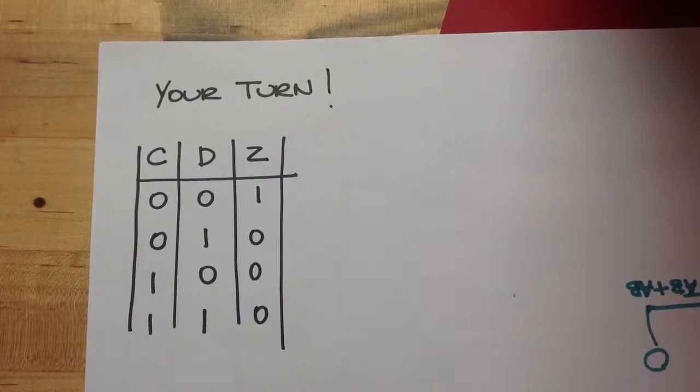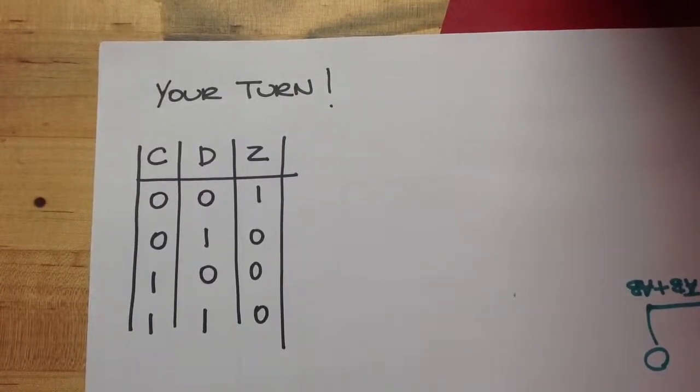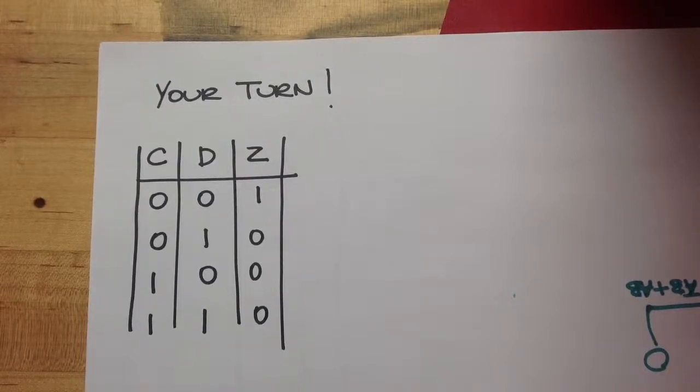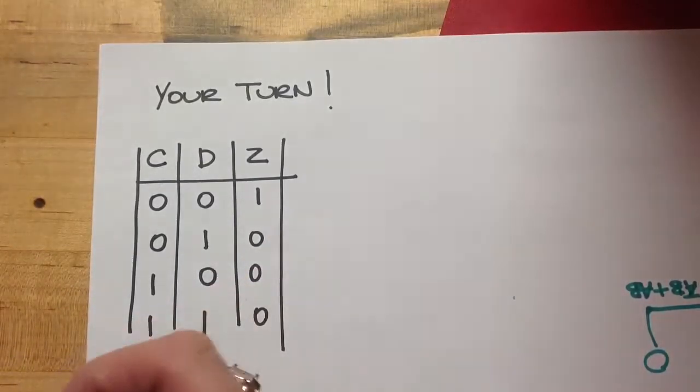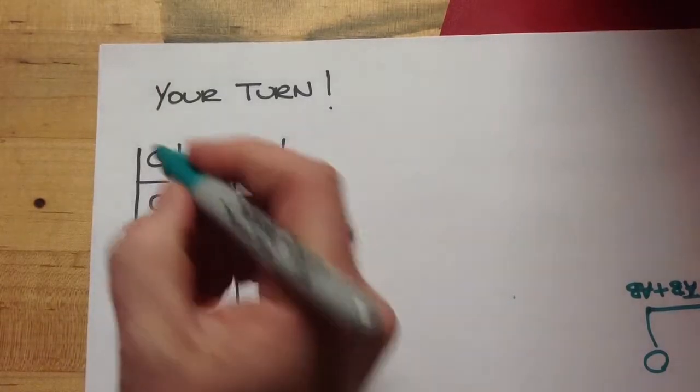All right, now that you've had a chance to see an example, I'd like you to take a turn. I've given you a truth table - these are the inputs, and Z is the output.